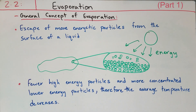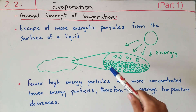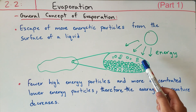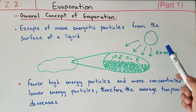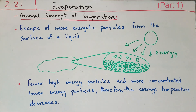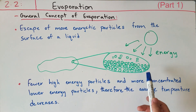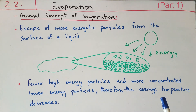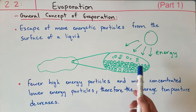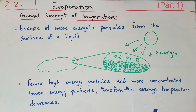The answer is that if more high-energy particles escape from the surface — such as these particles gaining energy from sunlight — then there will be fewer high-energy particles remaining and more concentrated lower-energy particles, which will decrease the average temperature of this liquid. We know that if the average kinetic energy of the particles decreases, as happens here when the higher-energy particles escape, then the temperature of these particles will also decrease.